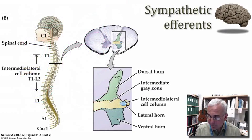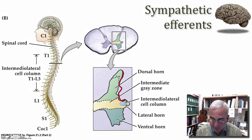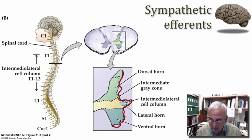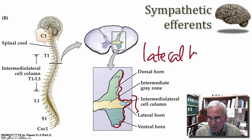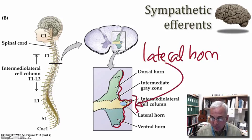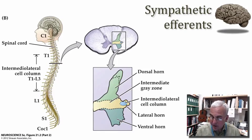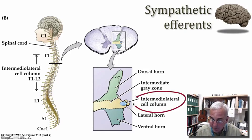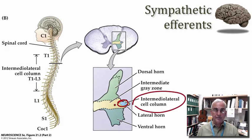Now let's take a closer look at the thoracic spinal cord. There is a distinctive feature of the gray matter in the thoracic spinal cord found on its lateral aspect — we call this the lateral horn, which tells you you're in the thoracic region when you see it in a cross section. This lateral horn is present because there is a column of neurons called the intermediolateral cell column, and these are the preganglionic neurons that send their axons out from the spinal cord to supply the ganglionic neurons, which in turn innervate the viscera.